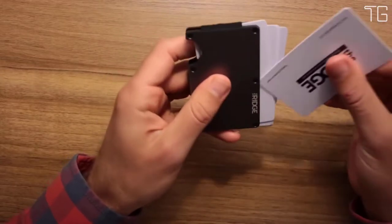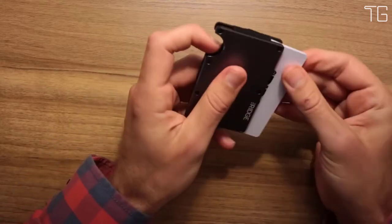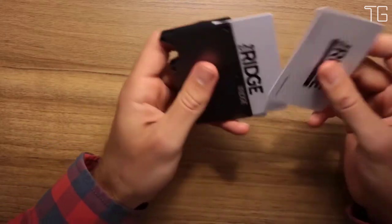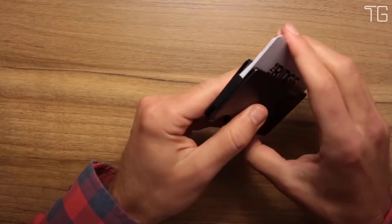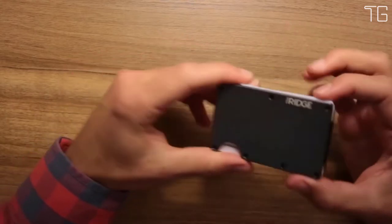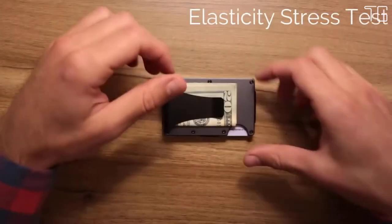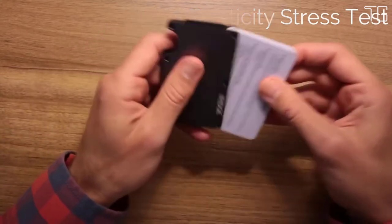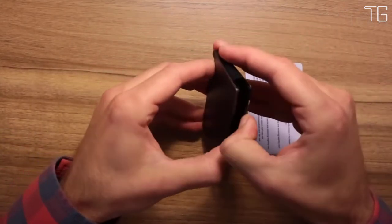Cash Strap and Money Clip. Both options keep your cash secure and easily accessible and the wallet as slim as possible. The Cash Strap is slightly slimmer, while the Money Clip has a more traditional feel. They have built the Ridge modularly so that you can always switch at a later date.